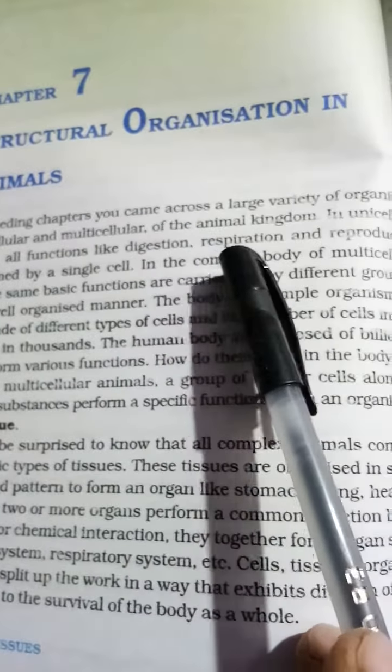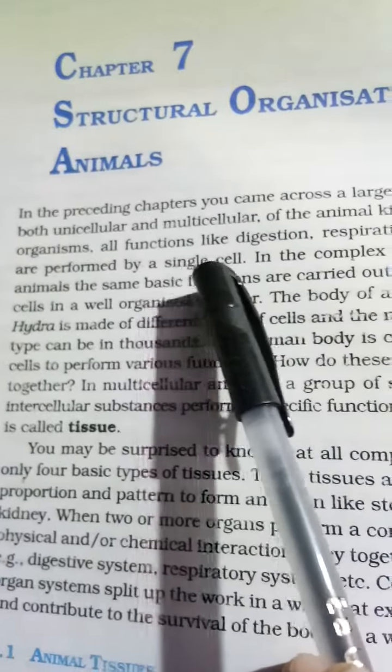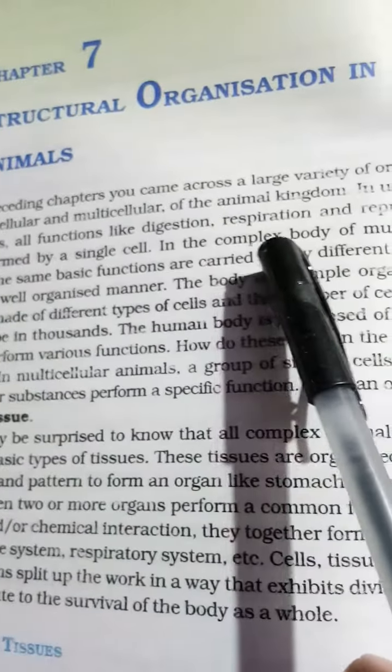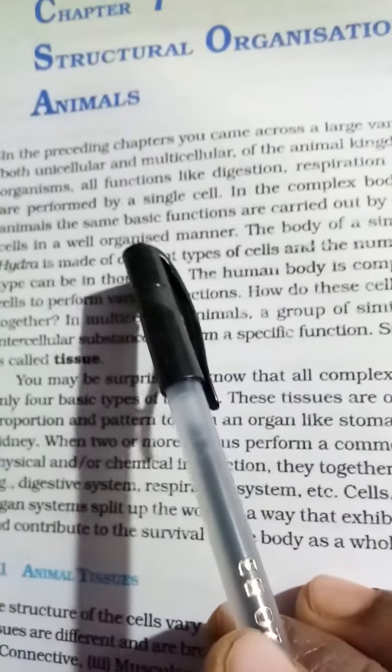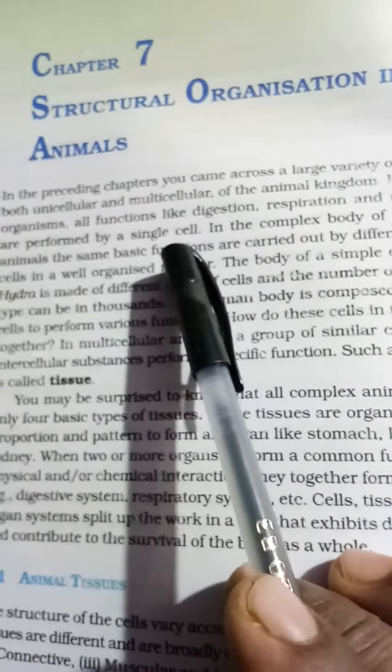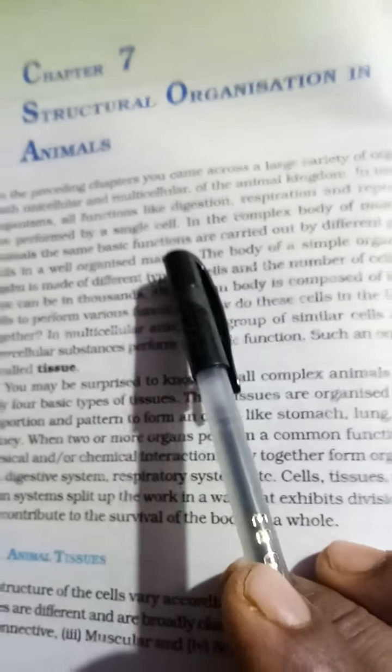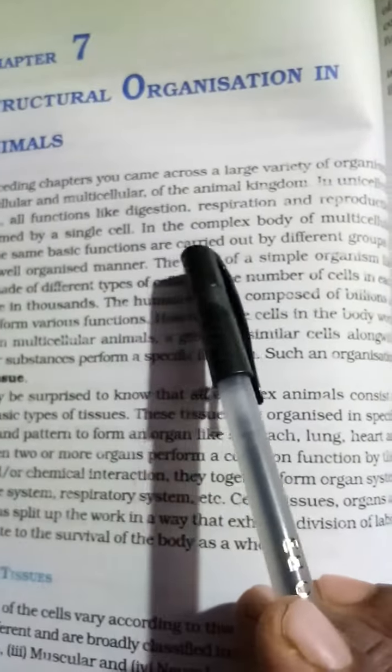Many cells of the animal kingdom. In unicellular organisms, all functions like digestion, respiration, and reproduction are performed by a single cell. The single cell will be the most important factor in the unicellular organism.